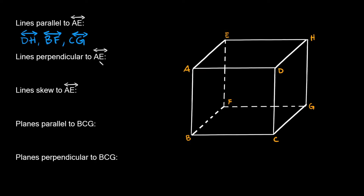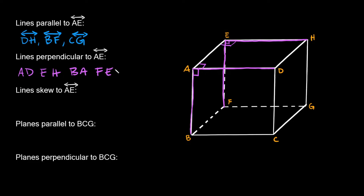Next: lines perpendicular to AE. These are lines that form 90-degree angles with AE. AD hits AE at a 90-degree angle, and so does EH. AB also hits this line at a 90-degree angle, and FE hits AE at 90 degrees as well. So there are four lines perpendicular to AE: AD, EH, AB, and FE.